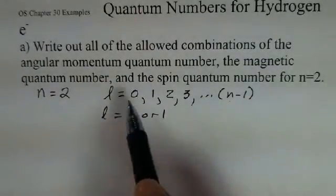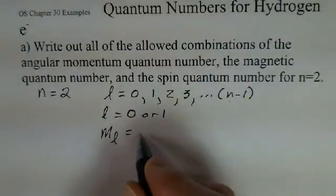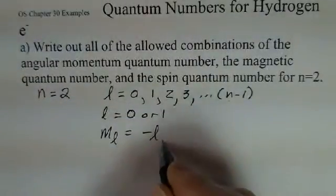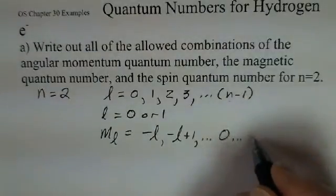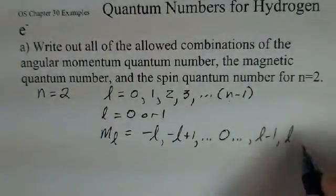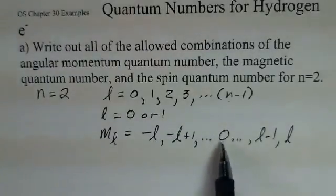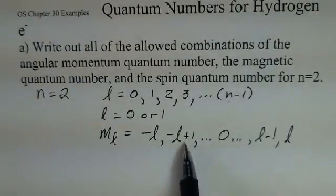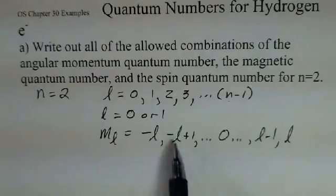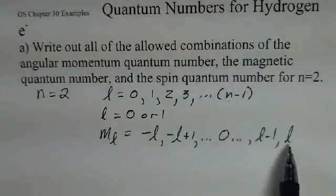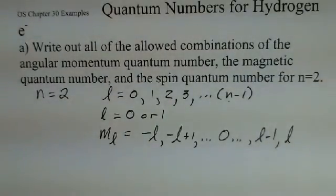The other number here, the magnetic quantum number, m sub l, has a list of integer values that start at minus L and then add 1 to that and continue to reach zero, and then go up to L minus 1 as a positive and then L. Now we'll have two possibilities. When L is equal to 0, m sub l can only be 0. We can't go to negative 1 or plus 1. If L is equal to 1, then we'd start this list at minus 1, add 1 to that to reach zero, add 1 to that and reach the L. So we have that arrangement of values for the m sub l numbers.